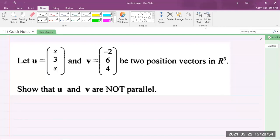This is taken from a May-June 2018 past paper. It says let the vector U and the vector V be two position vectors in R³. R³ means in the three-dimensional plane, and we are to show that U and V are not parallel.